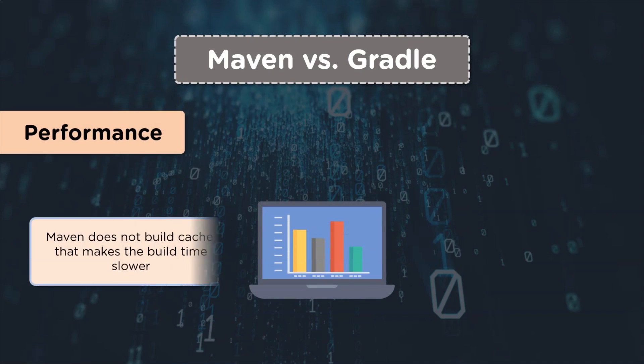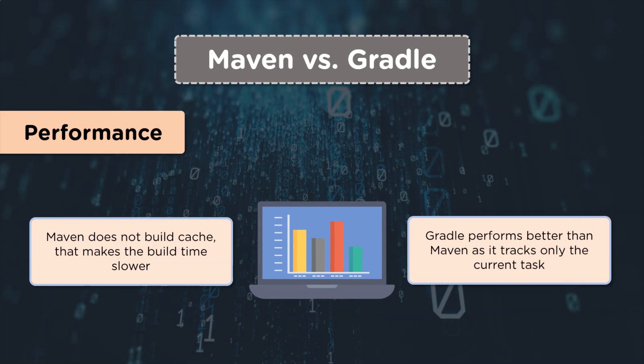The sixth and last pointer is performance. Maven has a slower build time since it does not use build cache, which means it does not create local temporary files during software creation, hence uses extensive time. Whereas Gradle performs better than Maven as it is optimized for tracking only current running tasks, meaning it only works on the tasks that have been changed to give better performance.